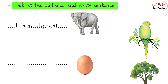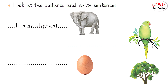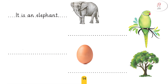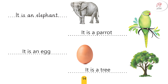Okay, look at the picture and write a sentence. It is an elephant — yeh toh likha hua hai. Ab is picture ko dekhen: it is a parrot. Very good. It is an egg. Very good. It is a tree. Very good.